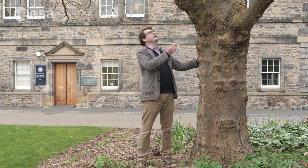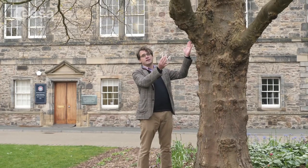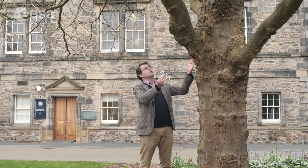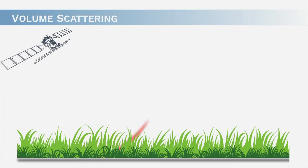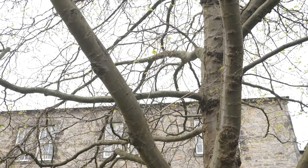The third type of scattering occurs with something as complex as a tree, which has many branches and twig structures. When microwaves interact with a volume such as a tree canopy, they scatter with each individual element in a three-dimensional volume. We refer to this as volume scattering.